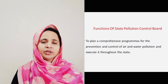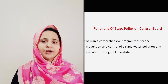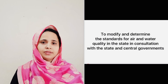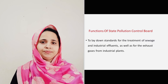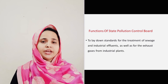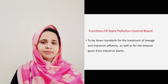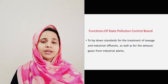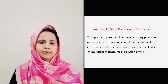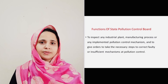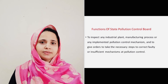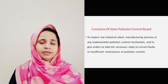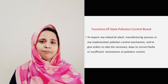Then, to plan a comprehensive program for the prevention and control of air and water pollution and execute it throughout the State. Then, to modify and determine the standards of air and water quality for the State in consultation with the State and Central Governments. Then, to lay down standards for the treatment of sewage and industrial effluents as well as for the exhaust gases from industries. Then, to inspect any industrial plant, manufacturing process, or any implemented pollution control mechanism and to give orders to take necessary steps to correct faulty or insufficient pollution control mechanisms.